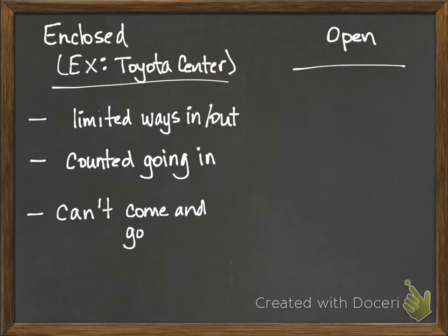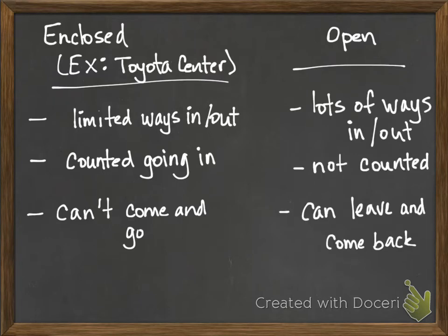With a parade it's completely different. You can enter from any block — it's not closed off and you can't take a ticket. There are too many ways in and out to have someone standing there with a clicker counting people. Plus you can leave and come back; you could walk in one block, leave two blocks down when a friend calls, then come back. Because of that we need to estimate since we can't actually count.